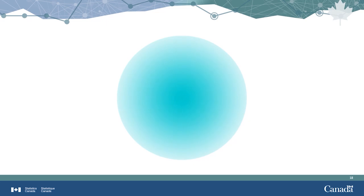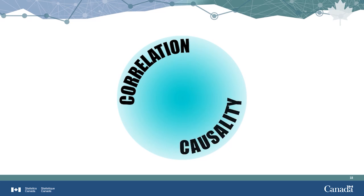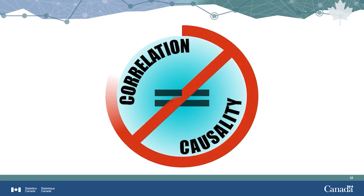Now let's move on to causality. If there is one key message you take away from this video, let it be this: correlation and causality, though sometimes used incorrectly as interchangeable concepts, are anything but. The correlation coefficient tells us how strongly a pair of variables are linearly related and change together. However, it does not tell us the reason why or how. Causality does. Causality is when there is a real-world explanation for why something is logically happening. You may have also heard this referred to as cause and effect.